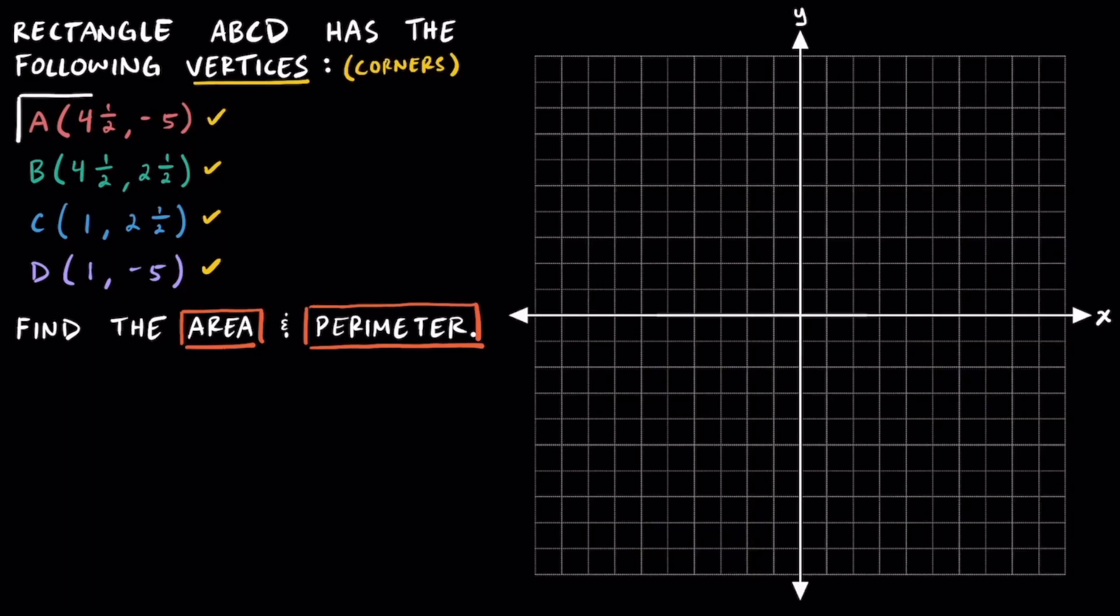Let's start with point A, which is located at four and a half comma negative five. To plot point A, we're going to move four and a half units to the right from the origin and then five units down from there. Point A is located in quadrant four.